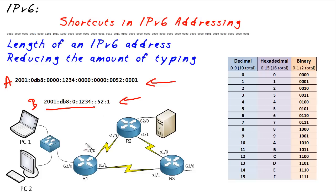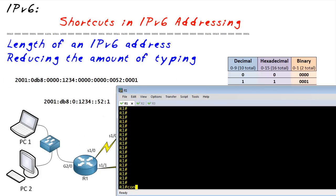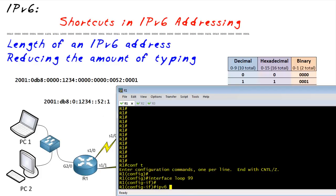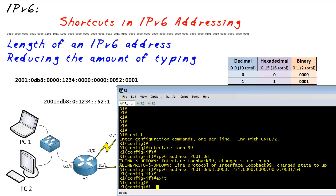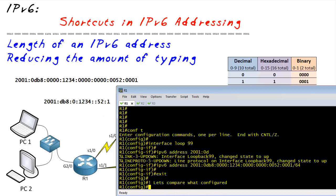As an example, let's configure a loopback interface on R1. We'll plug in the full address as an exercise and then look at the running config to see the shortcut version. At the console of R1, we'll go into configuration mode, create loopback interface number 99, and give it the full IPv6 address — 2001:0db8:0000... — with a /64 mask, representing the first 64 bits as network and the last 64 bits as host.